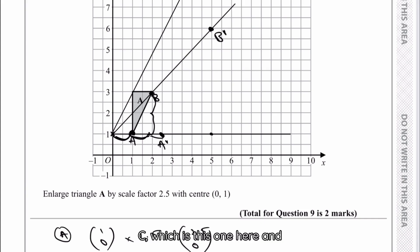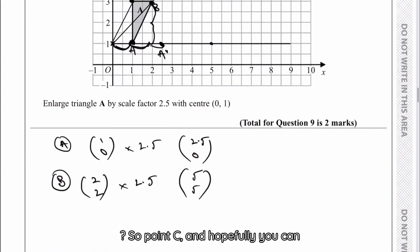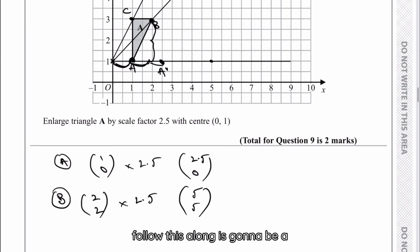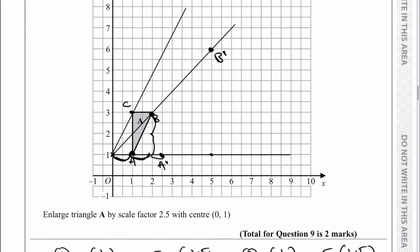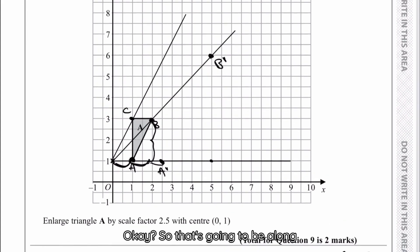Let's move on then to point C, which is this one here. That's a vector of (1,2). So point C is going to be a vector of (1,2), and then I'm going to multiply that by 2.5, and that's going to give my new location of (2.5,5). So that's going to be along to 2.5 and up five jumps.